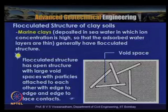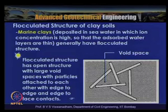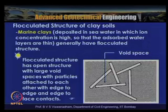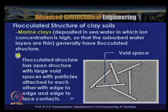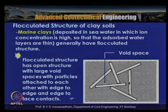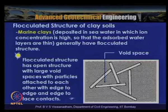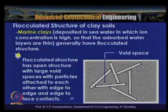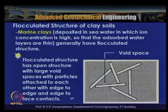Another structure is the flocculated structure, which results because of the net attraction. This predominantly occurs in marine soil deposits, particularly for marine clays deposited in sea water where ion concentration is high. The adsorbed water layers are thin and the structure generally has edge-to-edge or edge-to-face orientation, resulting in a void space truss-like open structure with large void spaces and particles attracted to each other at edge-to-edge or edge-to-face contacts.